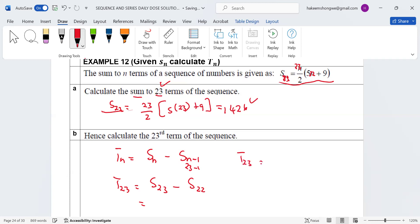Open bracket, here you're going to have 22 over 2, open bracket, 5 multiplied by 22 plus 9. And then you can type this in your calculator. Maybe let's do this one separately. So you have 1426 minus what do you get for this one? 1809.